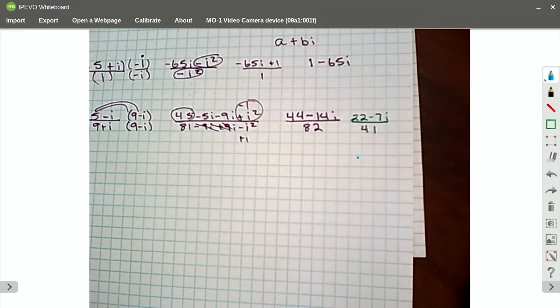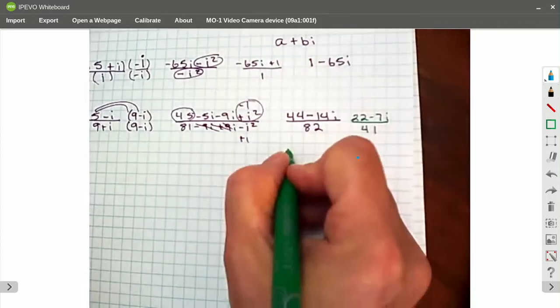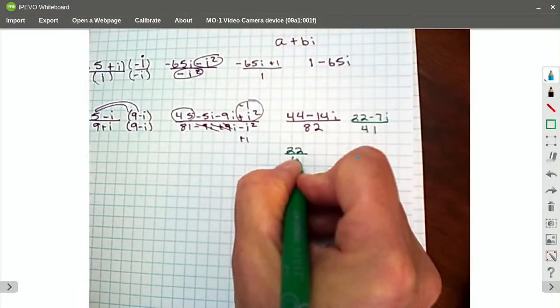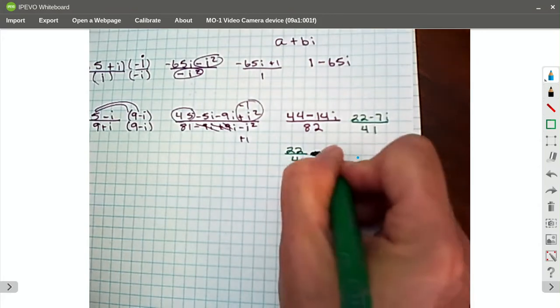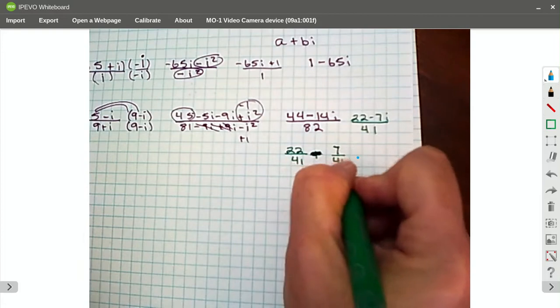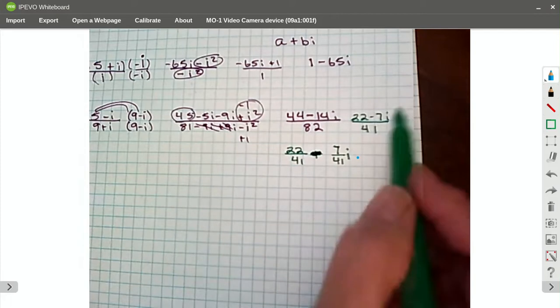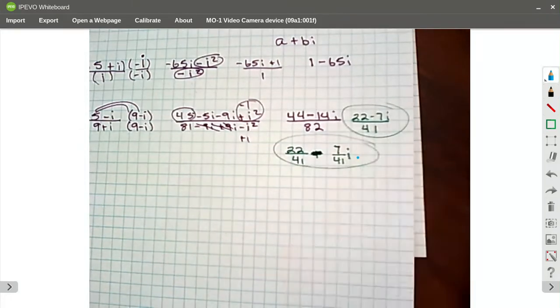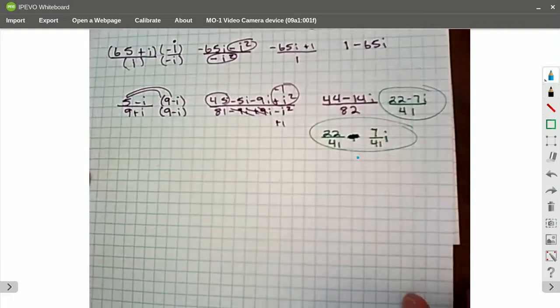And to write that more in my standard form of a plus bi, I'm going to say 22 over 41, oops, not plus, minus 7 over 41i. Just writing it in standard form. Same answer. There's no difference in those answers, but just the standard form. That's what they'll probably want you to type in when it comes to MathLab.